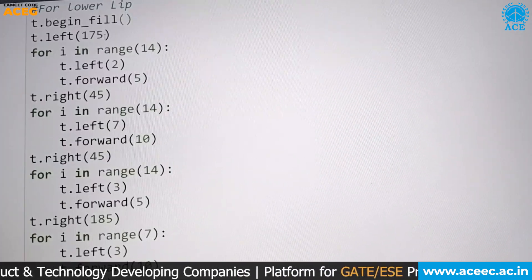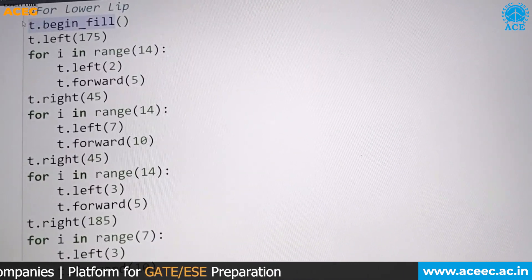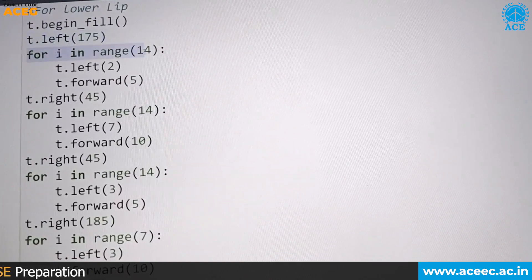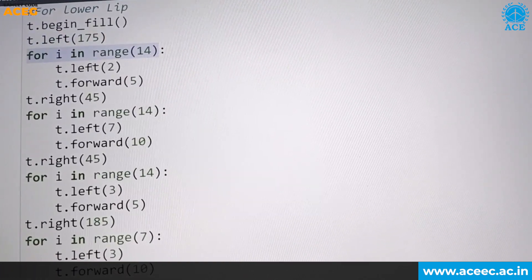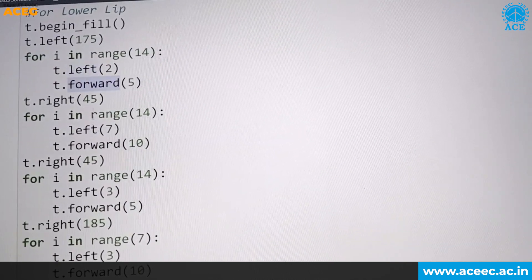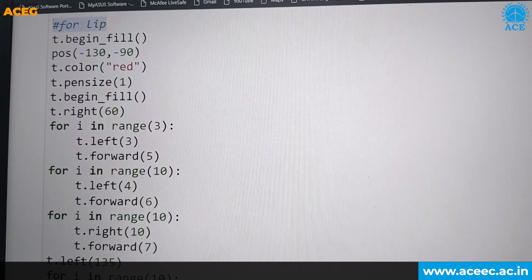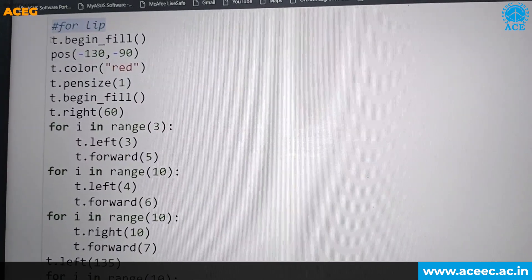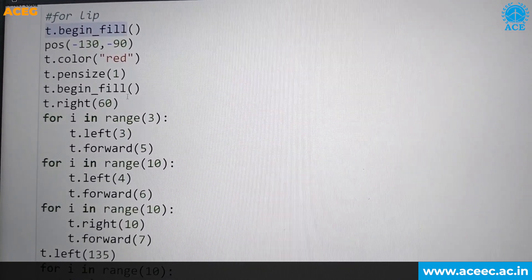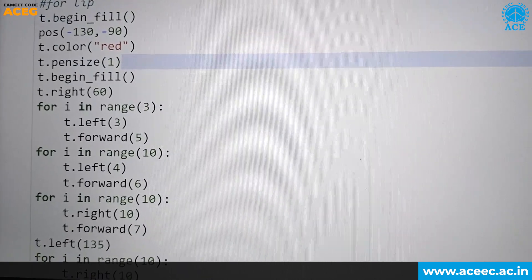To draw lips of Durga Mata, we use begin fill method. It starts from left to right from range 175 with attributes like position. We use attributes like position, left, forward with slight changes in attribute ranges in entire for loop. Similarly, for upper lip, we use begin fill method with attributes like position, color, left, forward, right with a pen size of 1 with color red. We completed the design with end fill method.